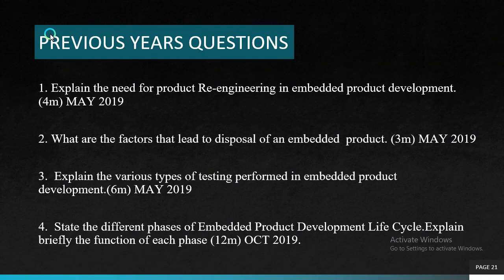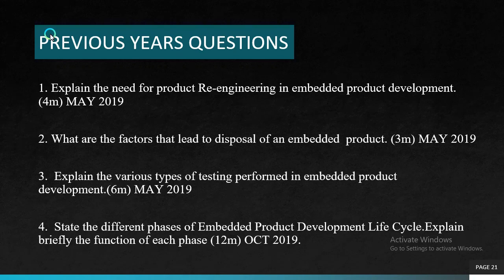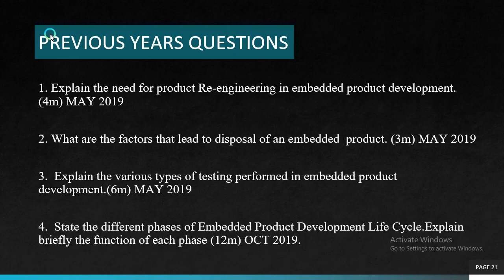These are some previous year university questions: first, explain the need for product re-engineering in embedded product development (4 marks, May 2019); second, what are the factors that lead to disposal of an embedded product (3 marks, May 2019); third, explain the various types of testing performed in embedded product development (6 marks); and fourth, state the different phases of embedded product development life cycle and explain briefly the function of each phase (12 marks). In this last question, you have to explain all phases briefly with possible diagrams. These are 4 possible questions which can be further asked in future university exams.